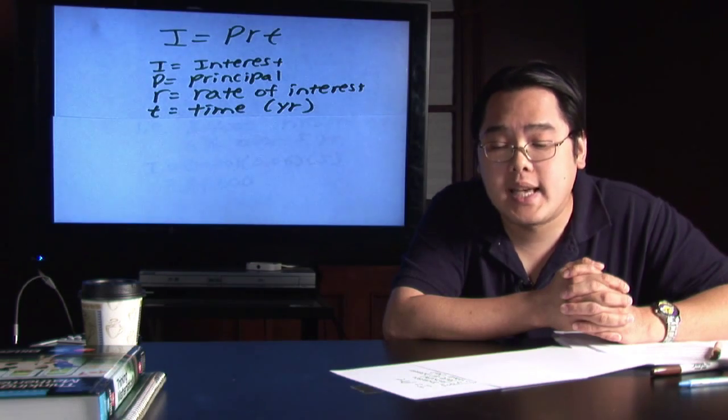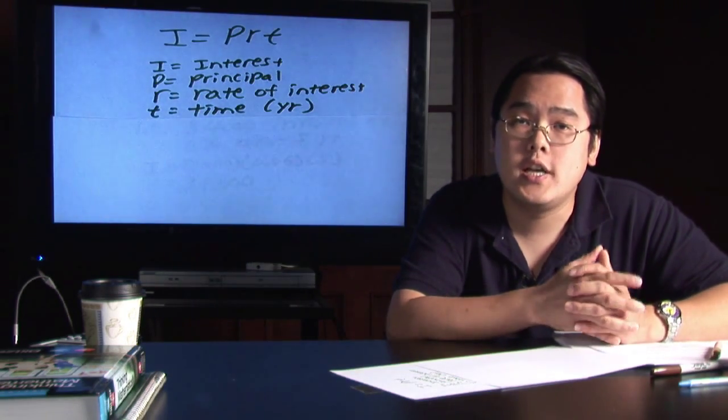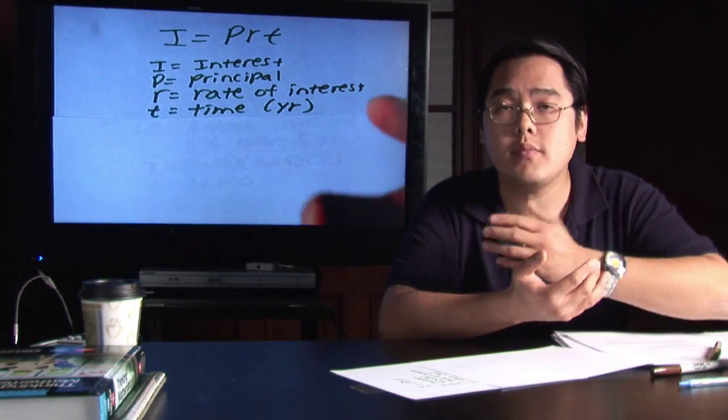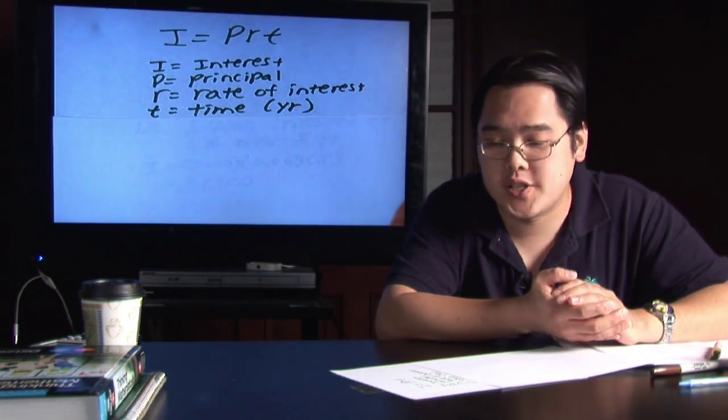R is your interest rate. And T is time, which is generally referred to in terms of the number of years that you will be maintaining this account, but it can always be adjusted.